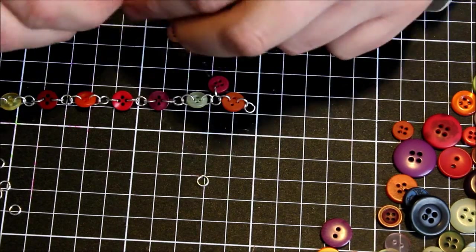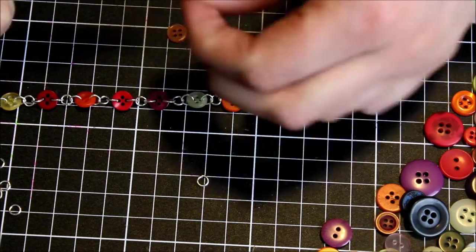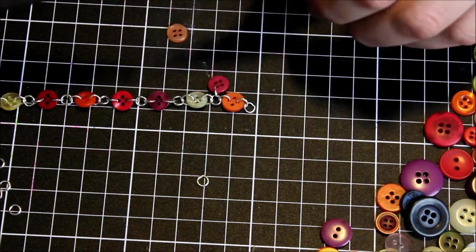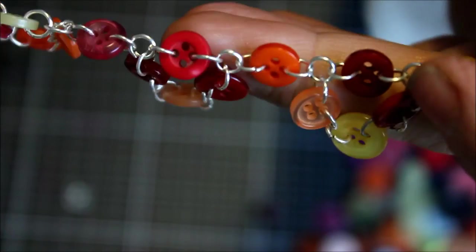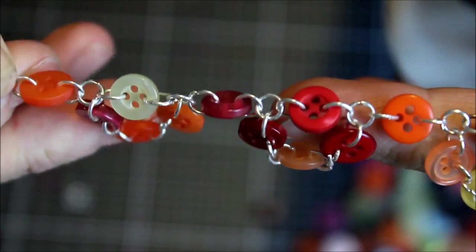So then I'm going to loop that around and attach the third button back to my first row in between the second button like this, to create little loops in between my buttons.